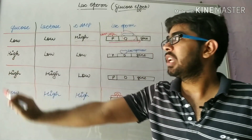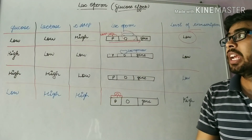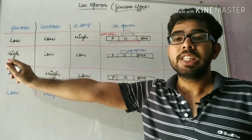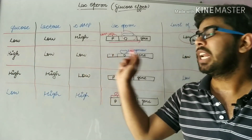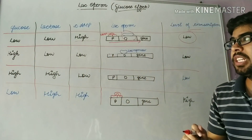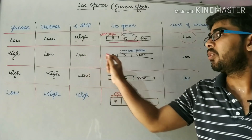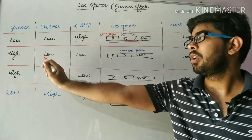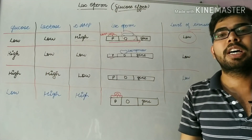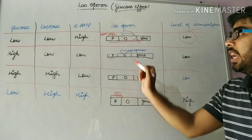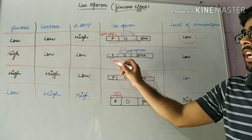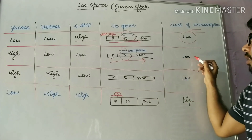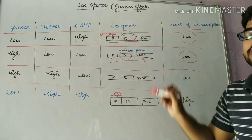The second case is when glucose concentration is high and lactose concentration is low. As glucose concentration is high, cyclic adenosine monophosphate concentration is low, so it is not able to bind to the promoter region. Because of low amount of lactose, the repressor is in active form and binds to the operator. RNA polymerase cannot proceed further and there will be low expression of the structural genes.